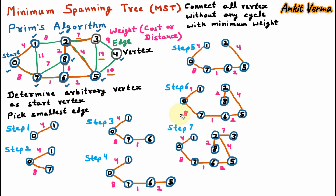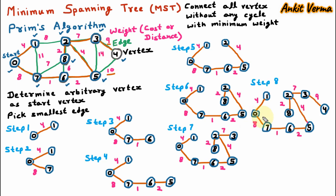One more edge is added and we have traversed vertex 3. Traversed vertices are 0, 1, 2, 3, 5, 6, 7 and 8, and only one vertex remains — vertex 4. We can reach vertex 4 from vertex 3 and vertex 5 with weights 9 and 10. The minimum weighted edge is from vertex 3 to 4. In step 8, one more edge is added and we have traversed vertex 4. The minimum spanning tree is now created using Prim's algorithm, connecting all vertices with no cycle and minimum weight.